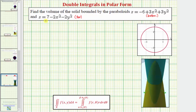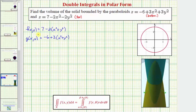So let's first write z in polar form. We can call the top function f of x, y equal to seven minus two times the quantity x squared plus y squared, and the bottom function g of x, y equal to negative six plus three times the quantity x squared plus y squared. Now because x squared plus y squared equals r squared, we can easily write these in polar form: f of r, theta equals seven minus two r squared, and g of r, theta equals negative six plus three r squared.